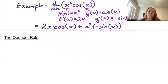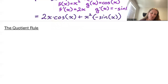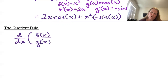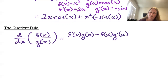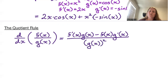Our last rule is the quotient rule. The quotient rule says that if we wish to take the derivative of f of x divided by g of x, this is equivalent to f prime of x times g of x, minus f of x times g prime of x, all divided by g of x squared.